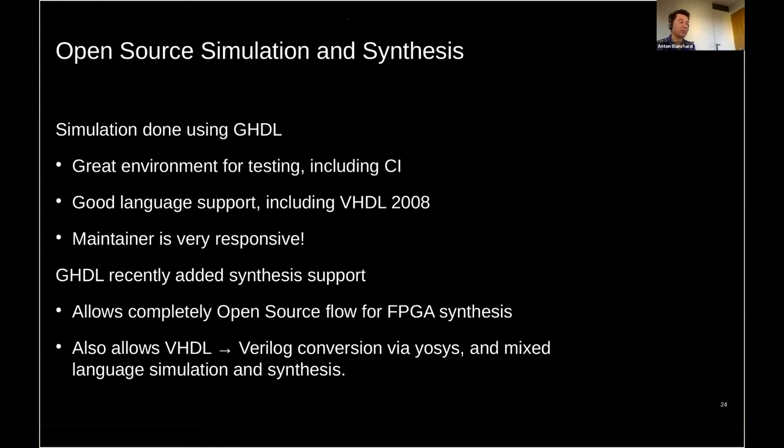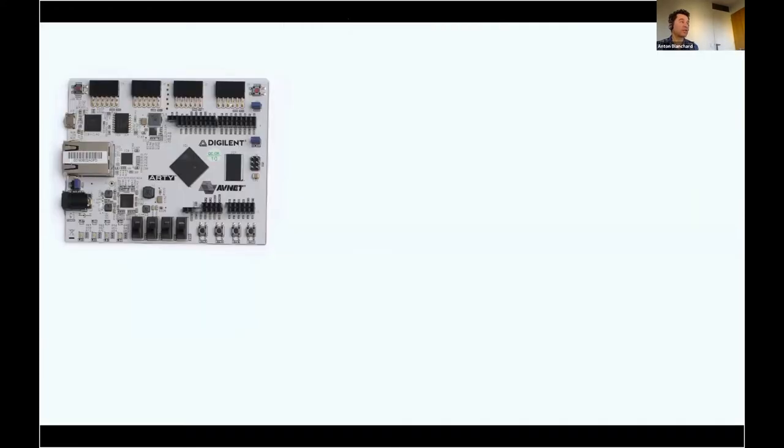GHDL recently added a completely open source flow now for FPGA synthesis. So you can go from the VHDL right through an image that will build and run on, for example, your Lattice FPGA. And so that's been fantastic. One other thing I'll point out, it also allows, which we haven't really had a good option of, being able to convert VHDL to Verilog and that goes through IOSIS. So it allows you to do mixed language simulation and synthesis, all this kind of stuff that we haven't really had in the open hardware world. So that's been another great development.